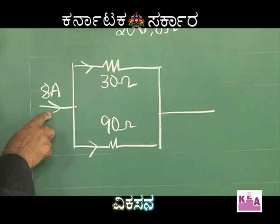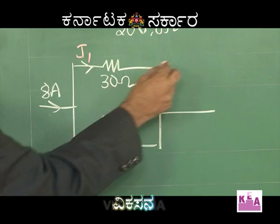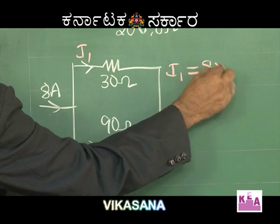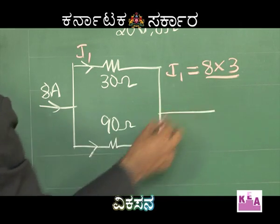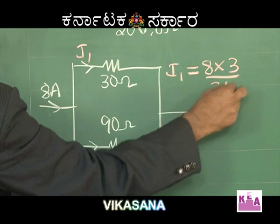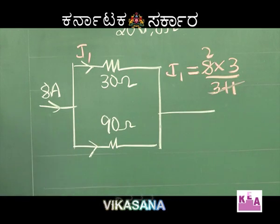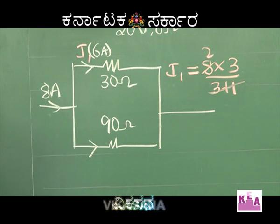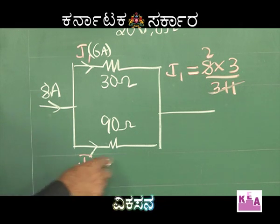Therefore divide 8 amperes in the ratio 3 is to 1. I1 is given by 8 into 3 divided by 3 plus 1, which is 8 into 3 divided by 4, giving us 6 amperes. So I1 is equal to 6 amperes. And I2 must be equal to 2 amperes, since the total is 8 amperes.